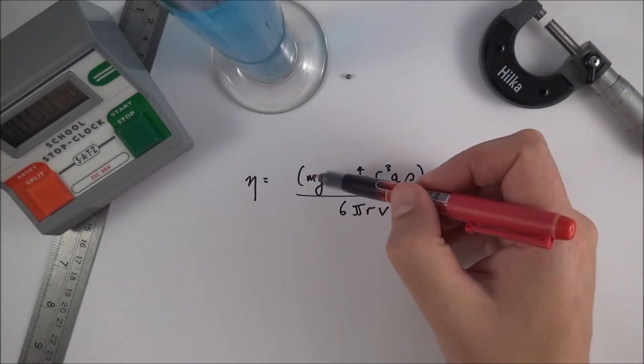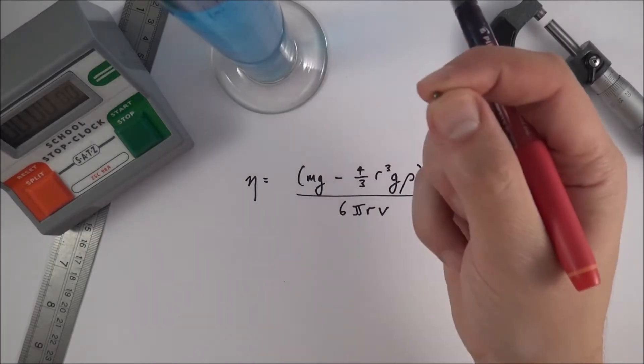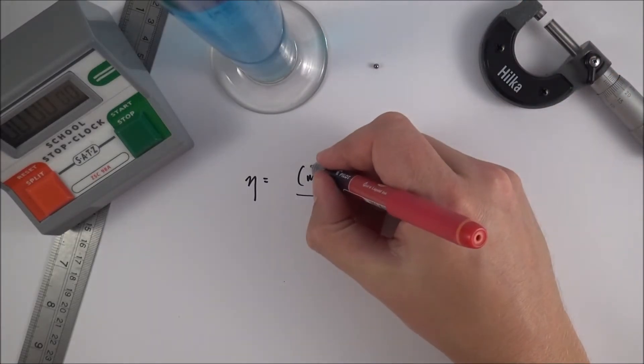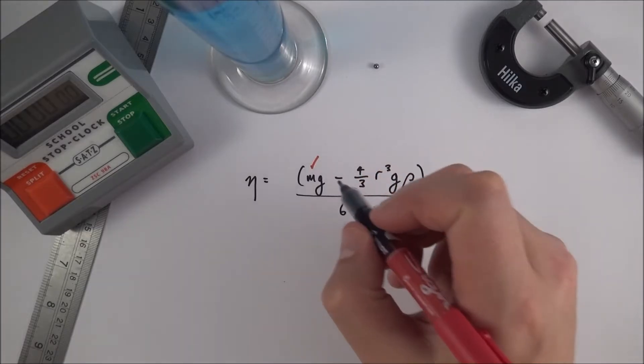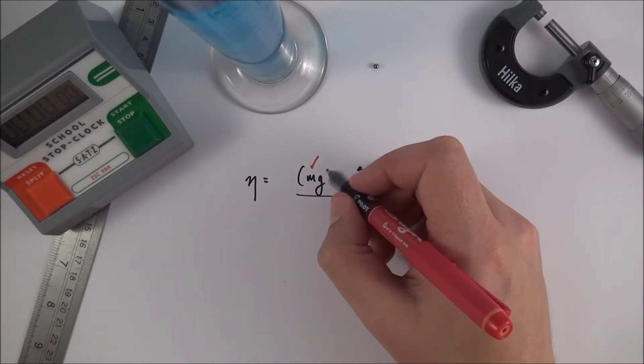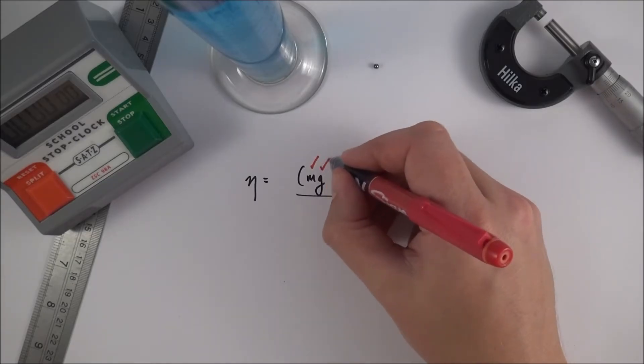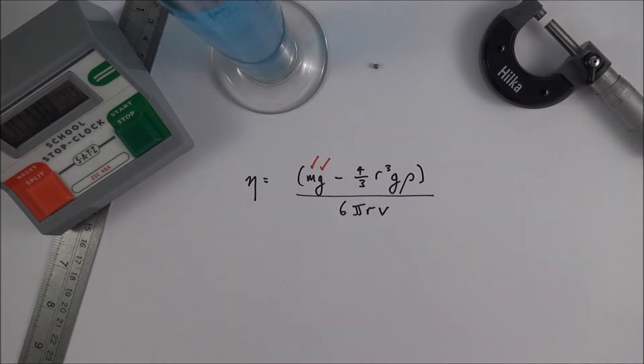Well we need to know the mass of the ball bearing and we can measure that using a mass balance. So this is something that we can easily find out and record. We then need to know the gravitational field strength so we can work out the weight and therefore the forces involved, and we know that g is just 9.81. Again that's given to us in our data booklet.